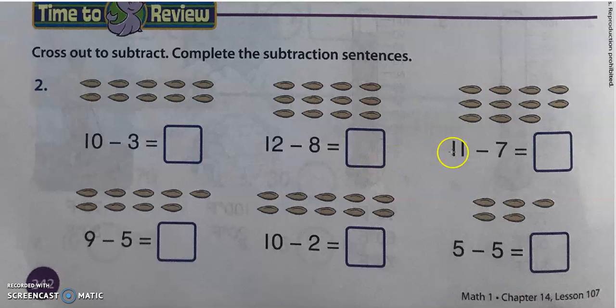If you cross out 5 from 9, you have 4. You have 8. And if you cross out 5 from 5, what do you get? Zero, very good.